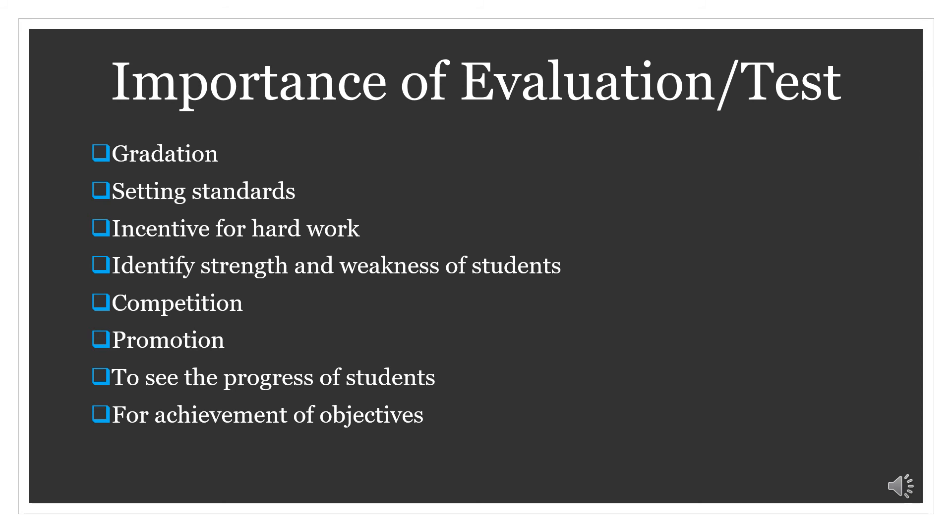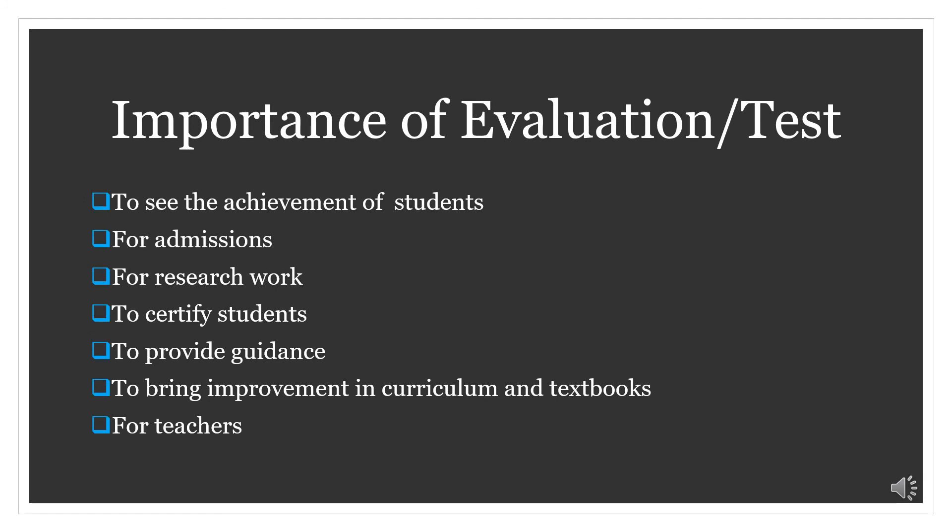For achievement of objectives — to see how much of the educational objectives have been fulfilled, we also need to conduct evaluation. Evaluation is part of a tripolar process in education, which includes objectives, then the teaching-learning process, and then evaluation. Next, to see the attentiveness of students in class, a test must be taken — this test can be oral or written.